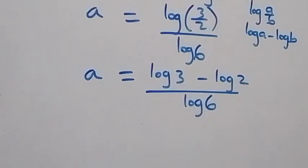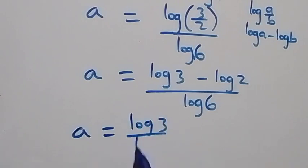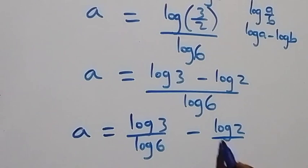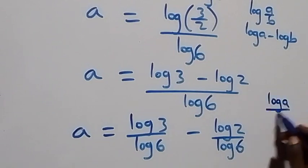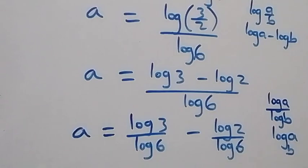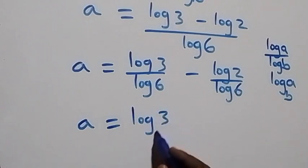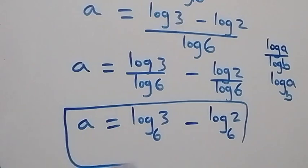Next we separate this into two fractions and we have a equals log 3 over log 6, minus log 2 over log 6. Then we apply the change of base formula, where log a over log b can be written as log a to base b. So what we have becomes a equals log 3 to base 6, minus log 2 to base 6.